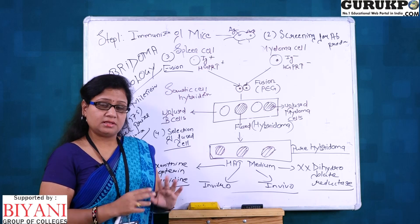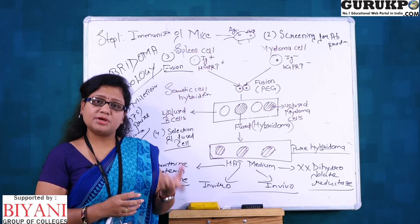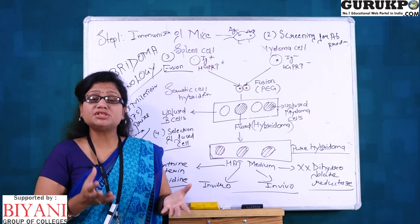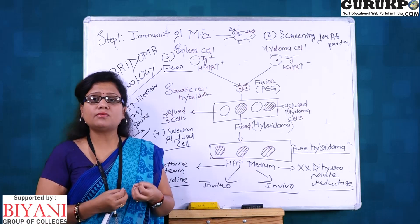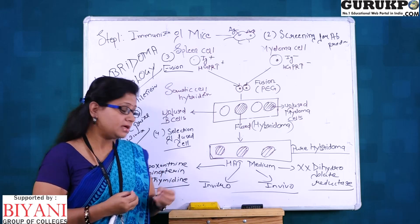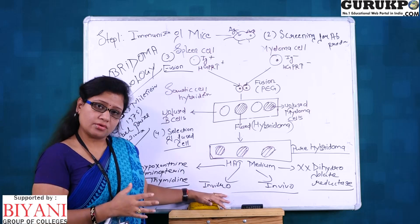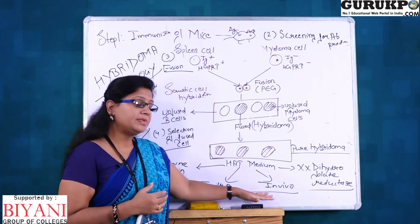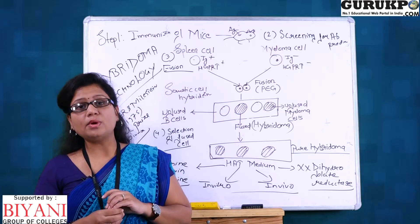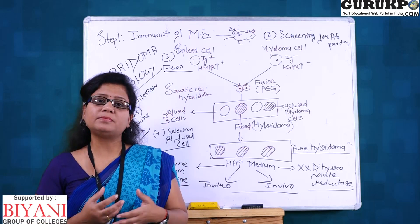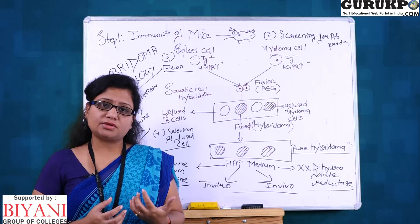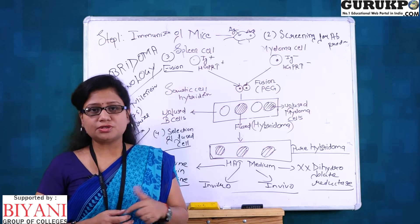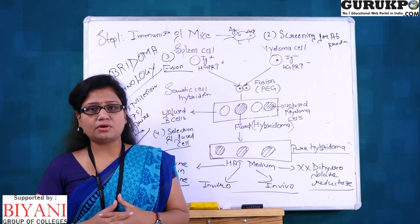This is how hybridoma cells are produced. For further subculture to obtain larger quantities, you can either grow them in vitro using hybridoma technology, or in vivo by injecting them into mice again for antibody formation into the ascitic fluid. Thank you for watching the video — please like, share, and subscribe to gurukpo.com.